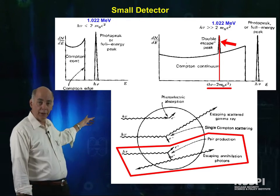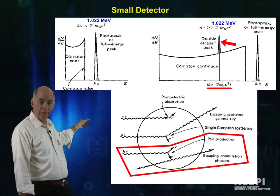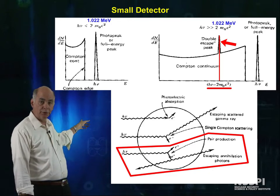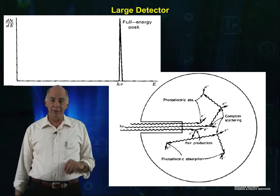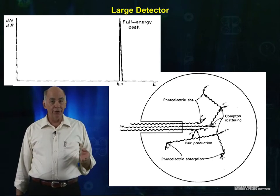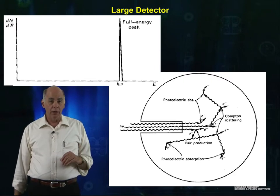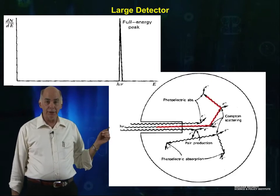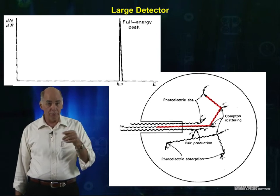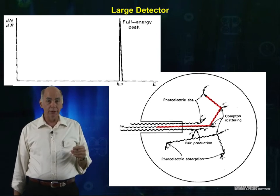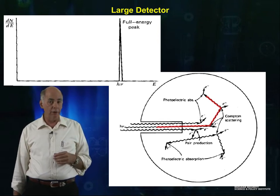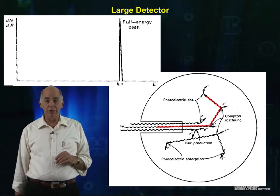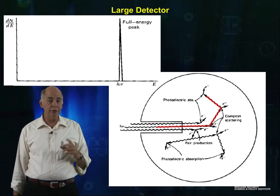If we have a large detector, what a different story it is. Now, we win at everything. As before, photoelectric events are captured. After an initial Compton interaction, the scattered photon undergoes multiple Compton scatters until the last scattered photon is in low enough energy, they are finally soaked up by a photoelectric reaction. All of this happens so fast that this signal appears as a full energy peak.